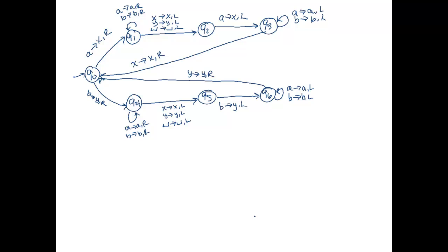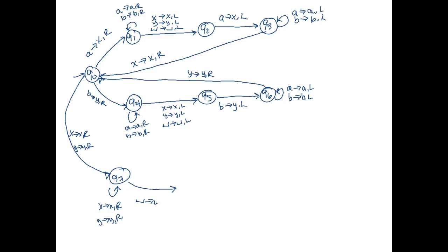At that point we want to transition to an accept path — we can accept directly, or scan right through the input until we hit a blank and then accept. We also handle the edge case: if the input is epsilon on startup, we're looking at a blank, so we take the blank→blank, move right transition and accept.